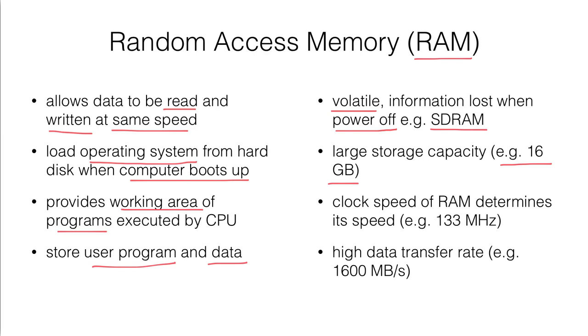We also have a clock speed for the RAM too. Besides CPU, RAM has also its own clock speed. For example, 133 MHz.